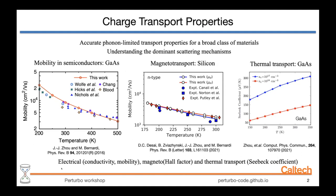Overall, our code is capable of computing electrical transport — that includes conductivities and mobilities — magneto-transport, that includes magneto-resistances, Hall mobilities and Hall factors, and thermal transport, that includes Seebeck coefficients and thermal conductivities.